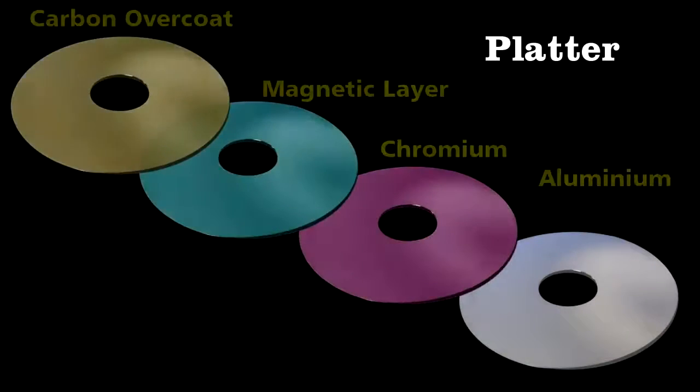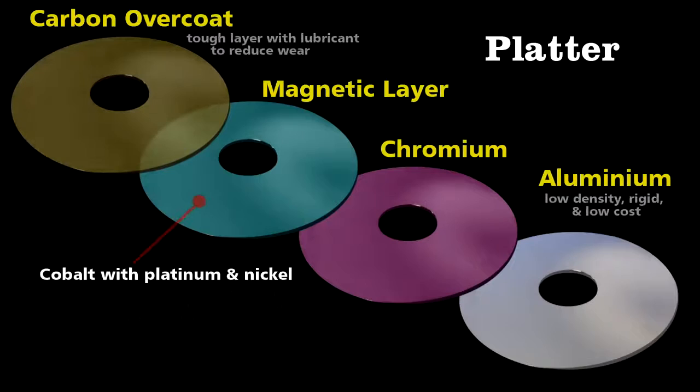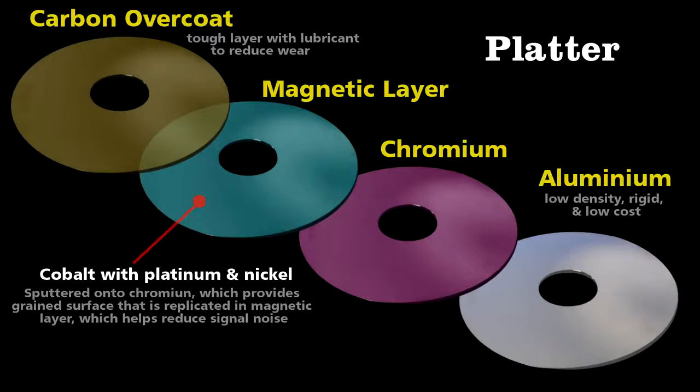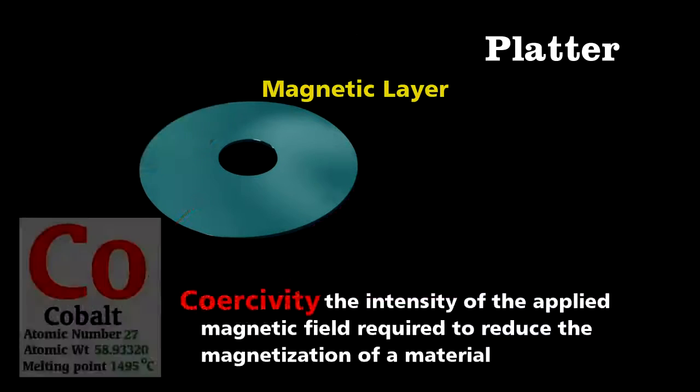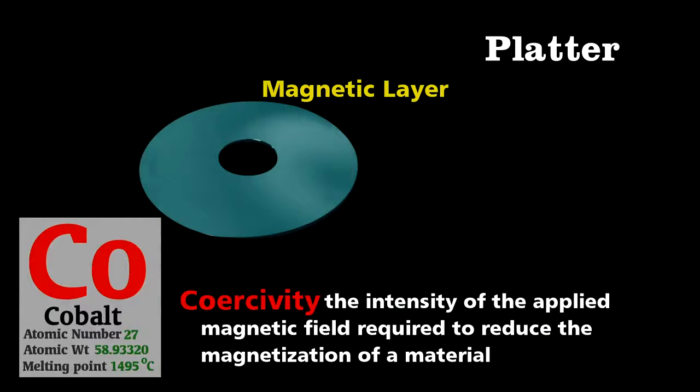The key element of the platter is the magnetic layer, which is cobalt with perhaps platinum and nickel mixed in. This mixture of metals has high coercivity, which means that it will maintain that magnetization, and thus data, until it's exposed to another powerful magnetic field.